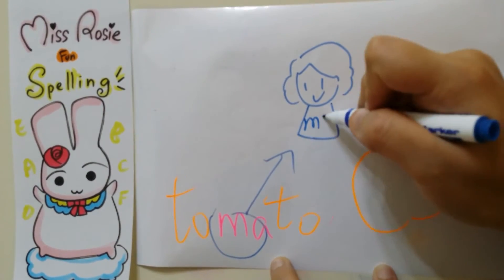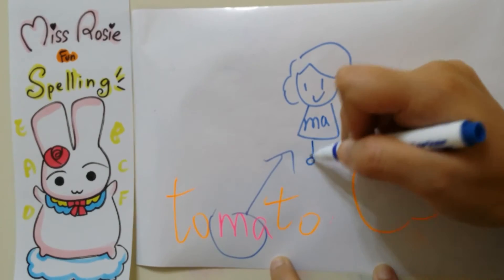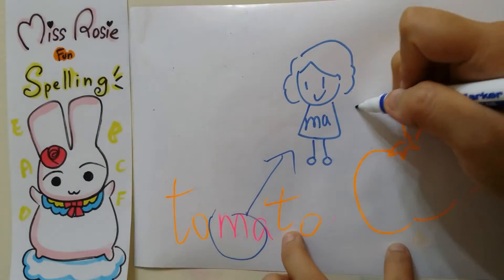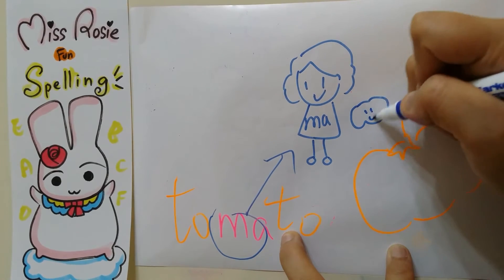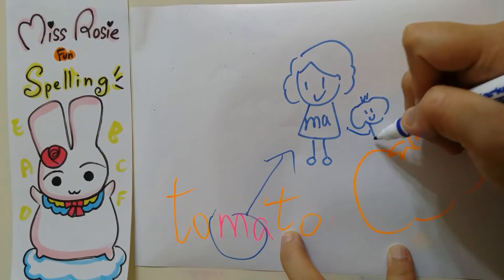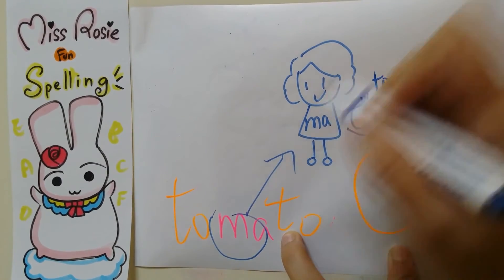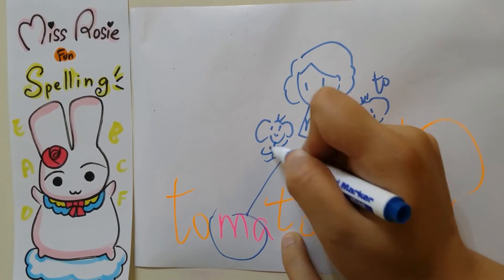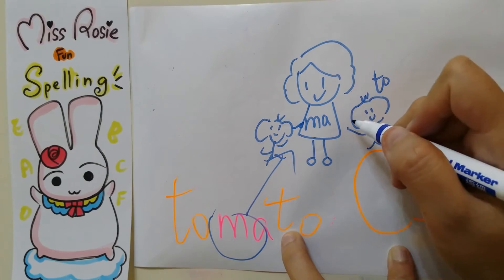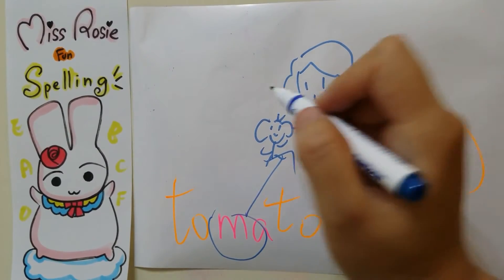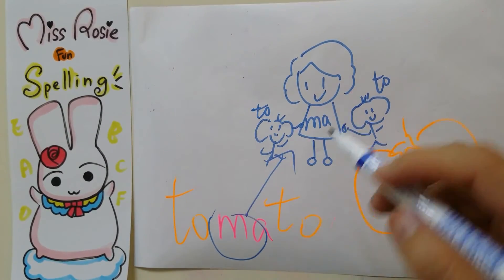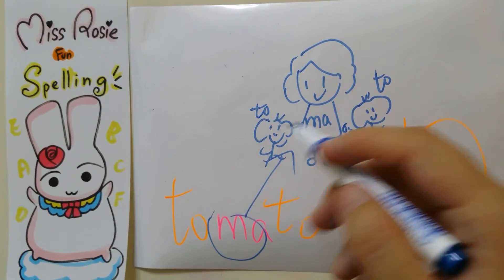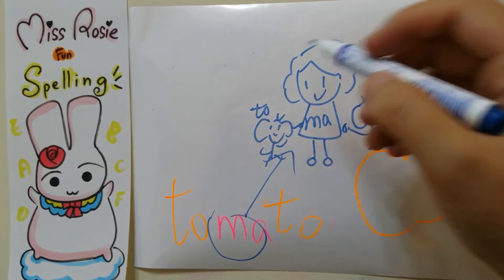And then she has two kids. Their head looks like this. Who are they? His toe. And toe. Sorry, it's a little bit ugly. So mom is having two kids. They are twins.